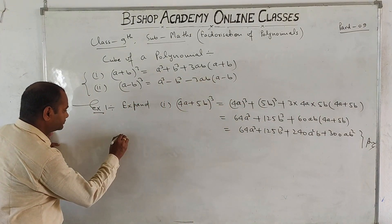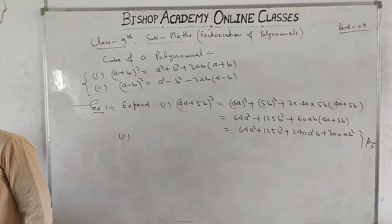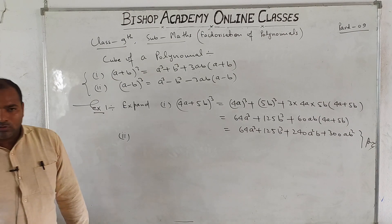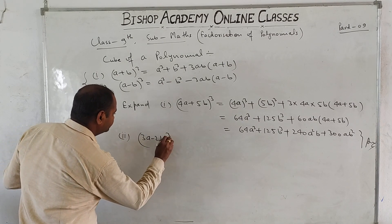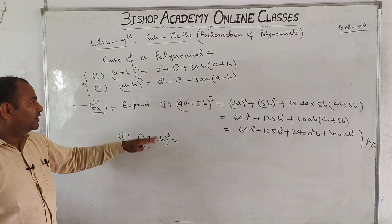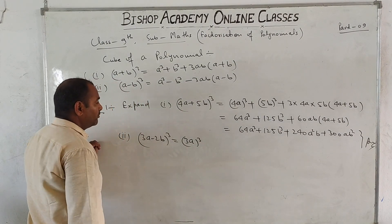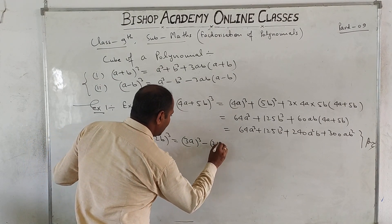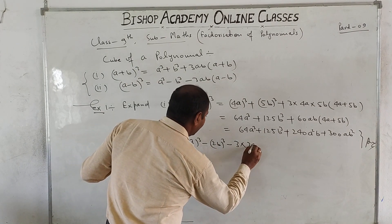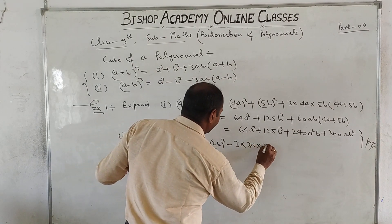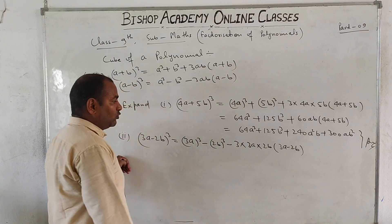Second part: 3A minus 2B whole cube. This is related to the second formula, A minus B whole cube, which we can apply here. A cube, that is 3A whole cube, minus B cube, that is 2B whole cube, minus 3AB where A's value is 3A and B's value is 2B, in bracket A minus B, that is 3A minus 2B.